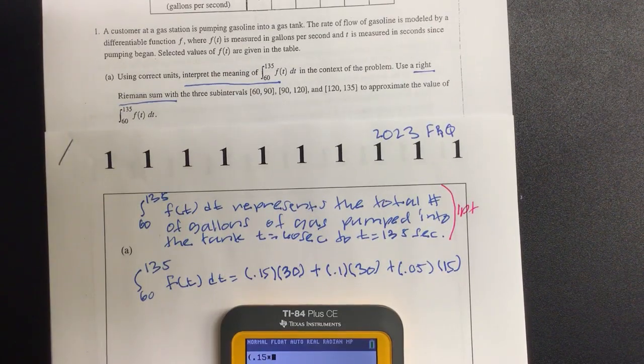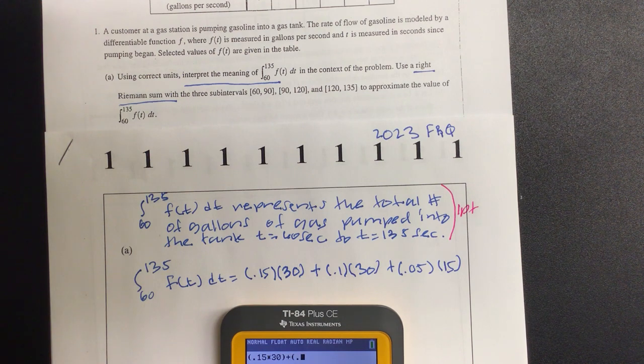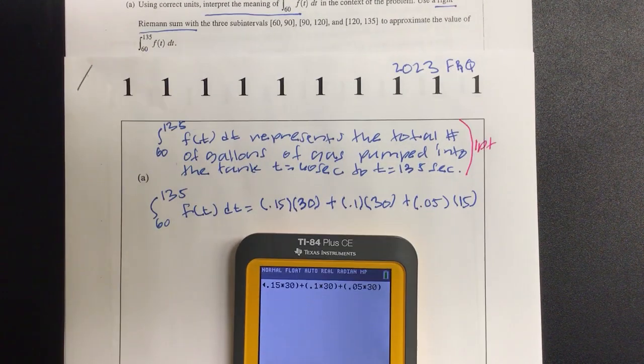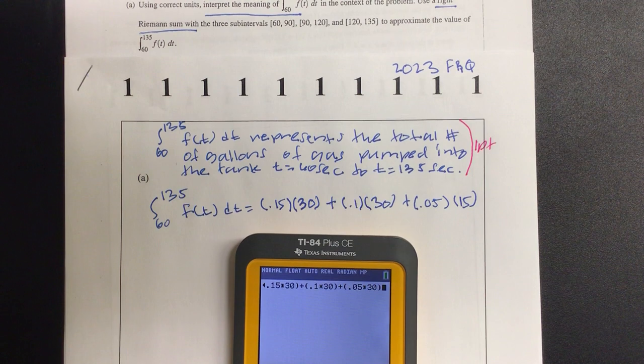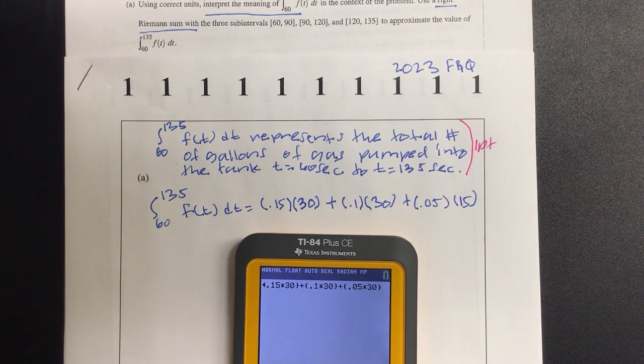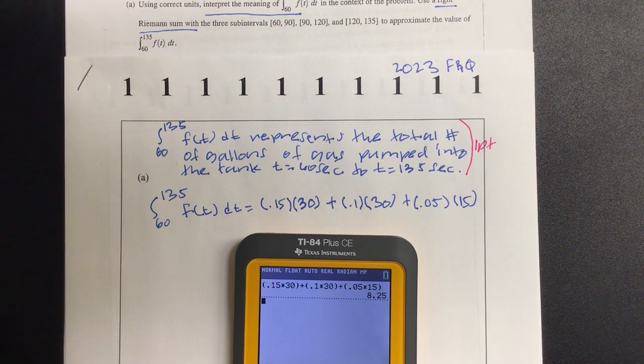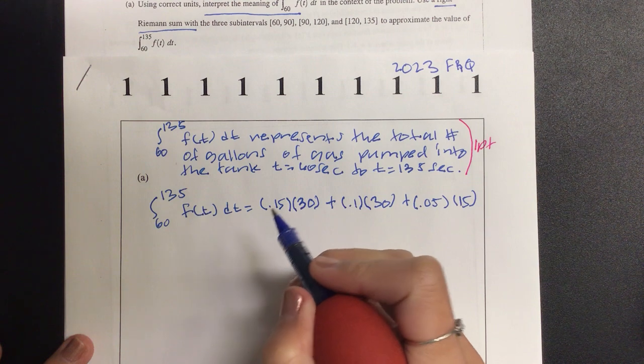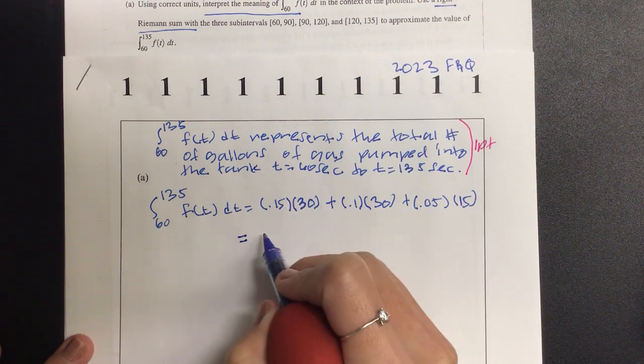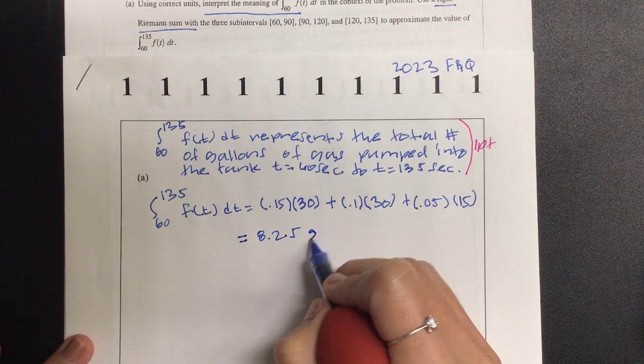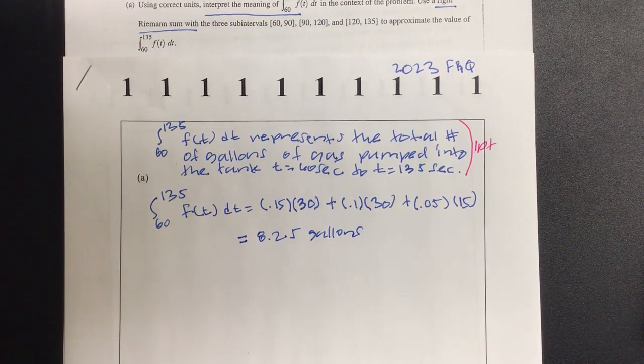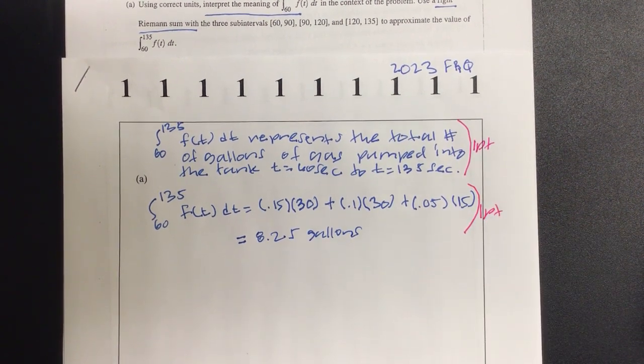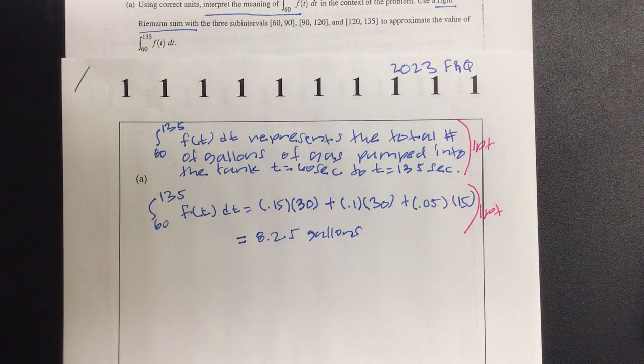So we have 0.15 times 30, 0.1 times 30, 0.05 times 15. And hopefully you're typing with me. 0.05 times 15. Thank you. 0.05. What did we get?